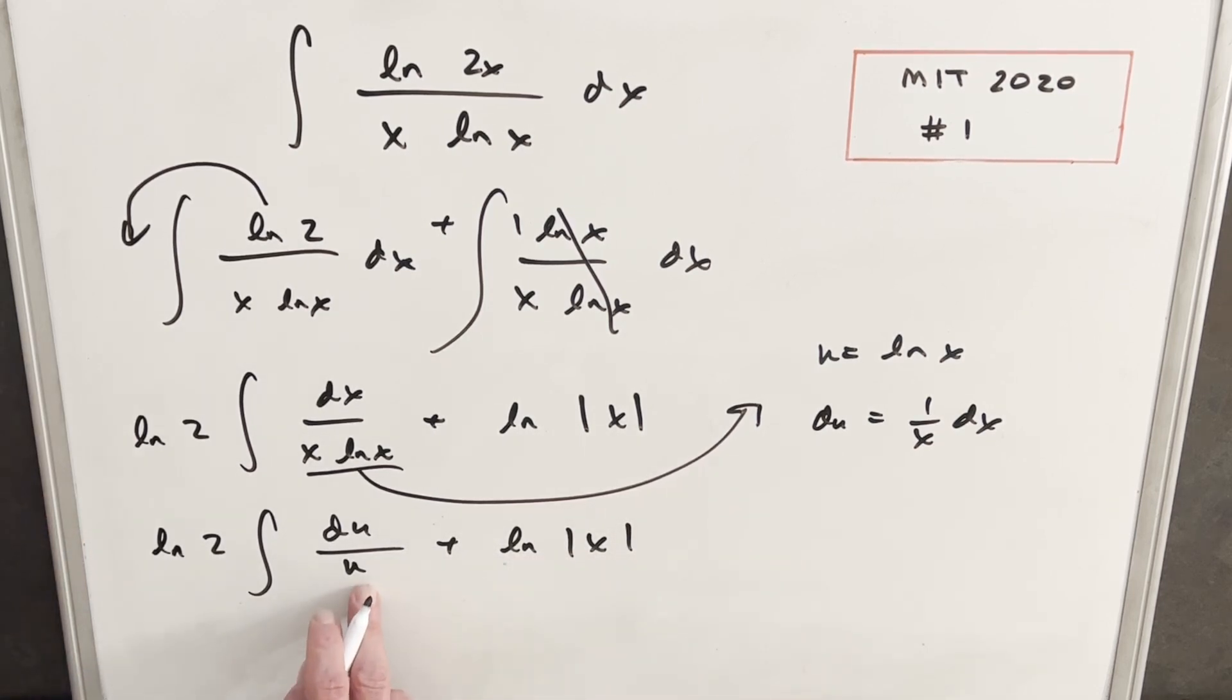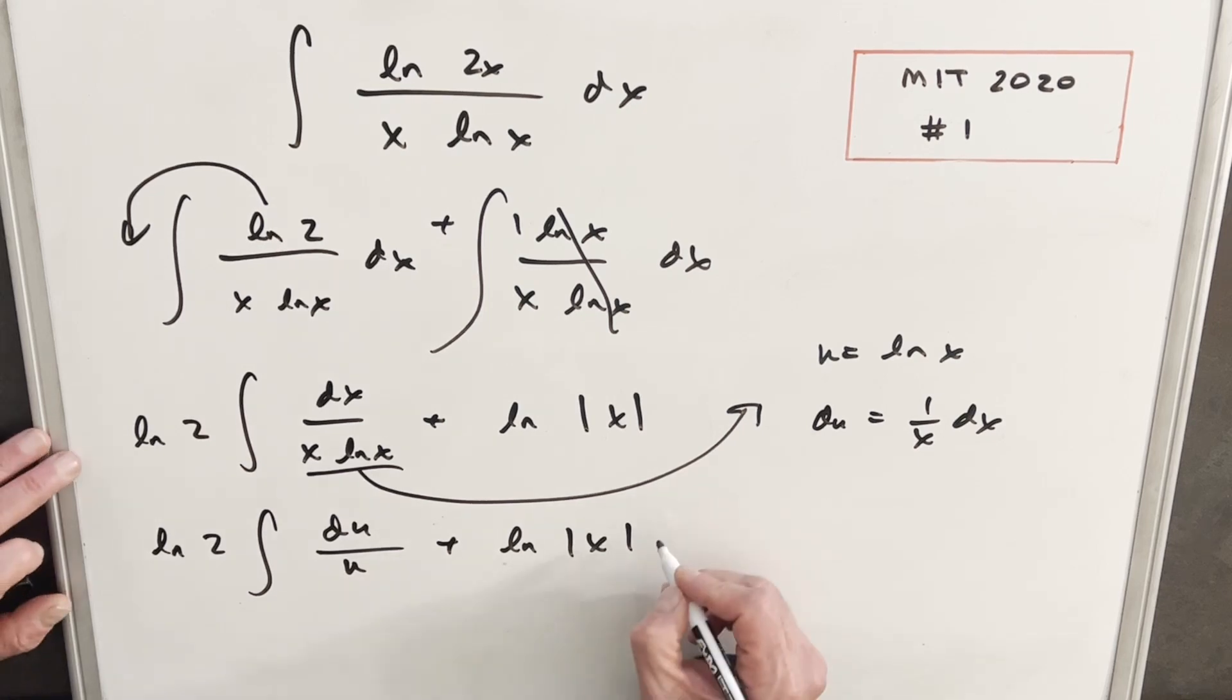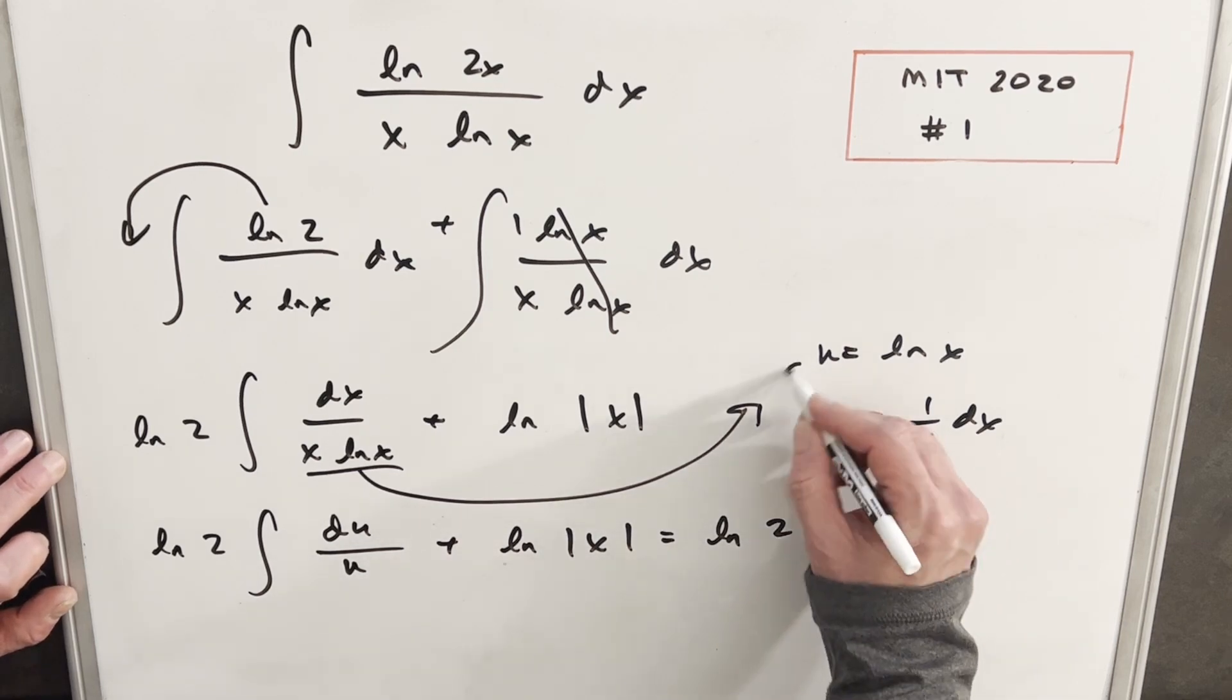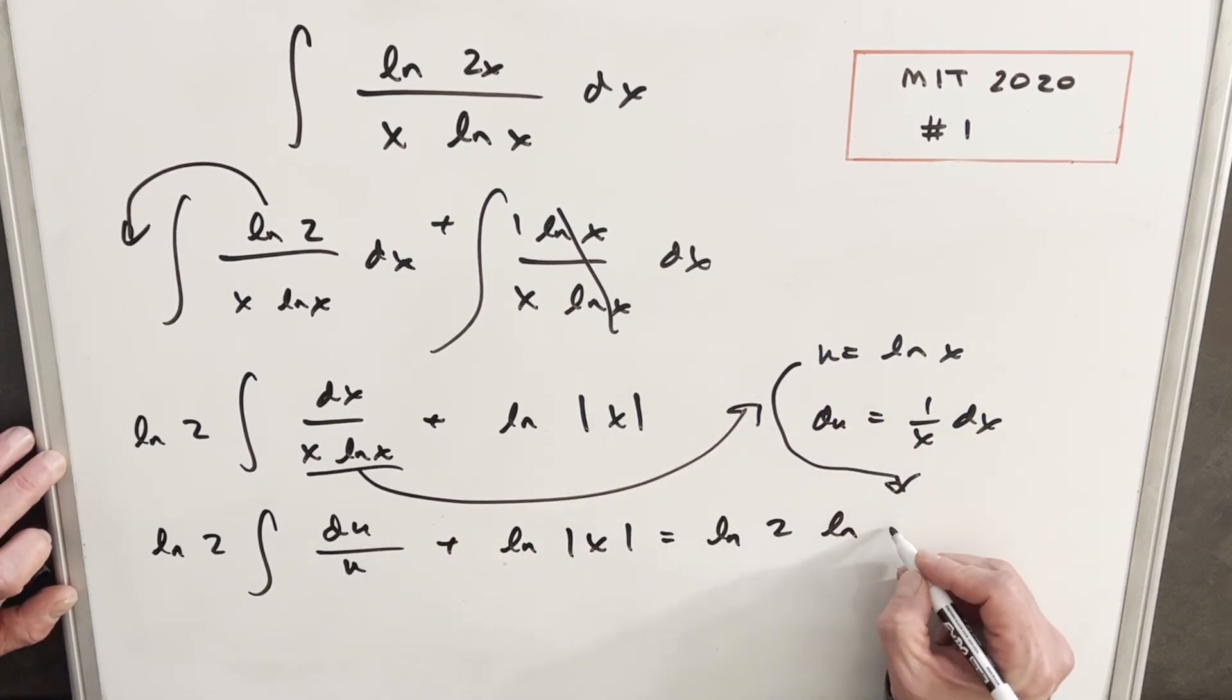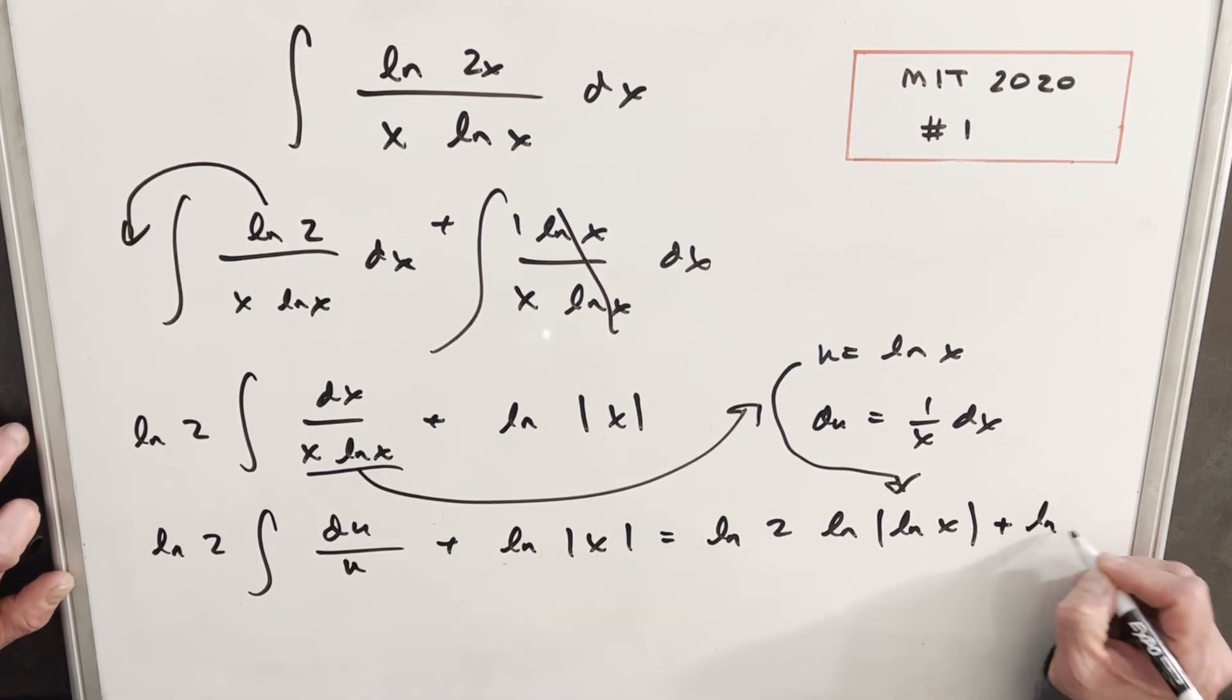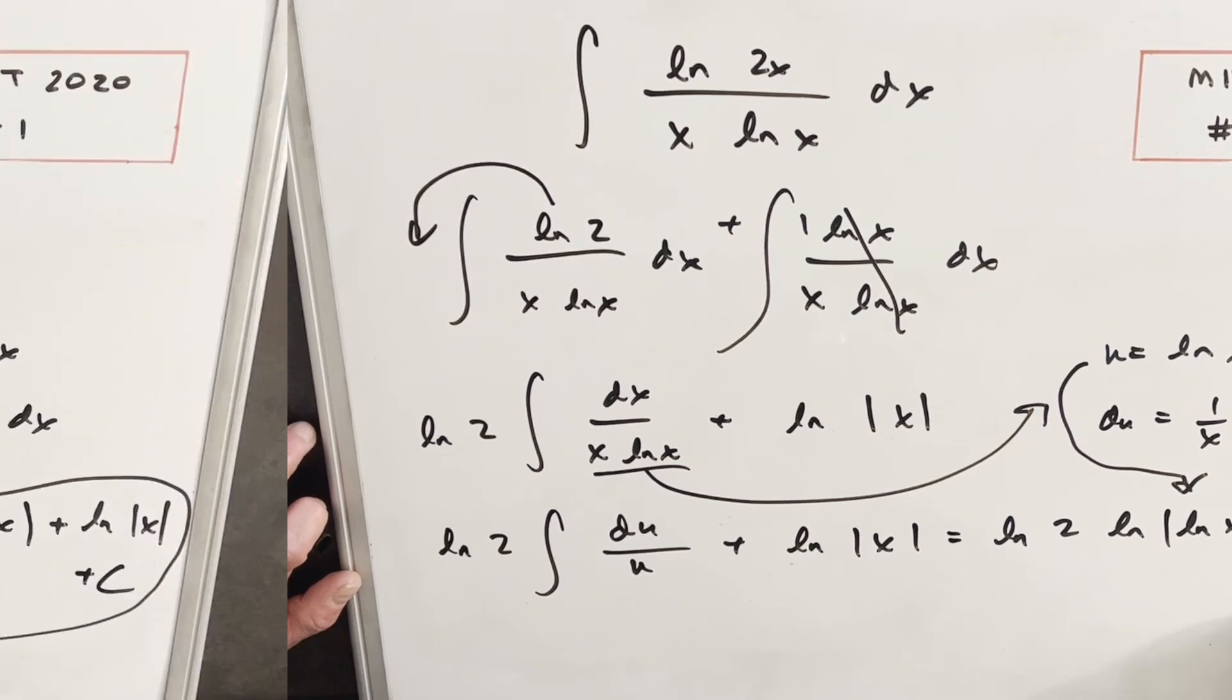Then integrating this, again, same integral as we had before, it's just natural log. So we're going to have ln 2 times natural log of u. But I'm just going to back substitute all in one step. So here we're going to have ln 2 times ln x plus ln of the absolute value of x. That's it.